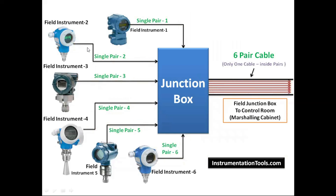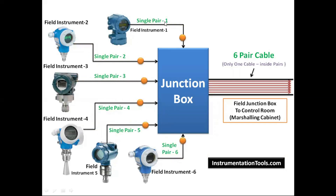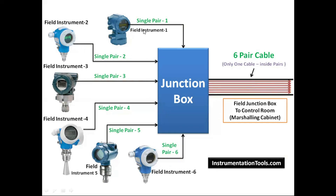For example, six sensors in the field produce 4 to 20 milliampere signals that go to the junction box present inside the field. From the junction box, the signal goes to the control room via a six-pair cable — since there are six instruments, each instrument requires two cables, making six pairs in total. The signals from all instruments are accumulated in the junction box and then routed to the control room.